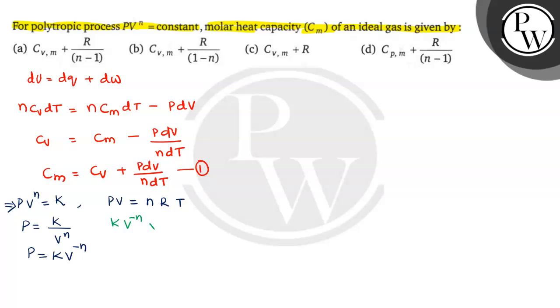So PV = k × V^(-n) × V = nRT. Therefore k × V^(1-n) = nRT, or k × V^(n-1) = nRT.